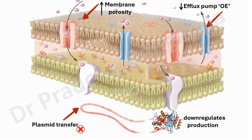It also has an effect in down-regulating the production of beta-lactamase. So these are the four variables on which this combination is hypothesized to be effective: increasing membrane porosity, reducing efflux pump overexpression, plasmid transfer inhibition, and down-regulating beta-lactamase production.